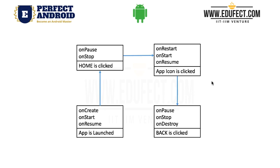Suppose we go and click the app icon. When the app icon is clicked, the app comes into the foreground. We will get onRestart because it's restarting, then onStart because it's getting visible, and then onResume because now it can start taking inputs from the user and interacting with the user. When we click the back button in Android, the app is destroyed. So we will first get onPause because the activity is starting to become not visible to the user, then onStop, and finally onDestroy.